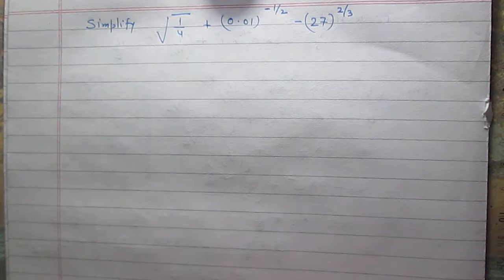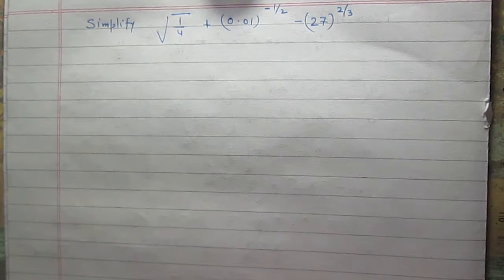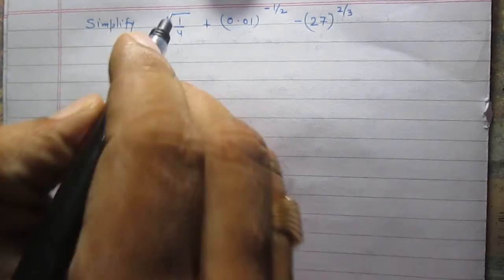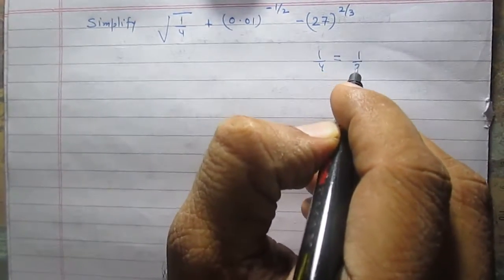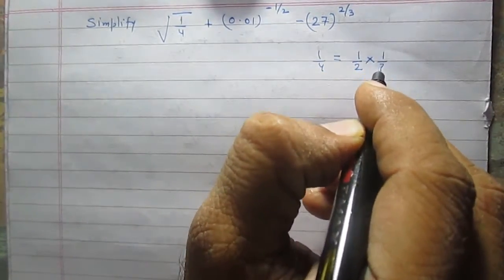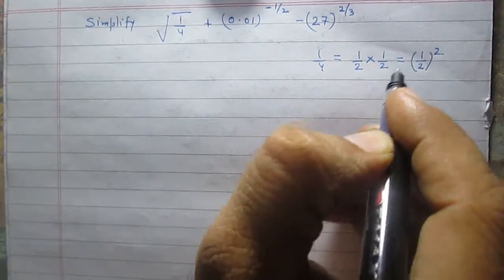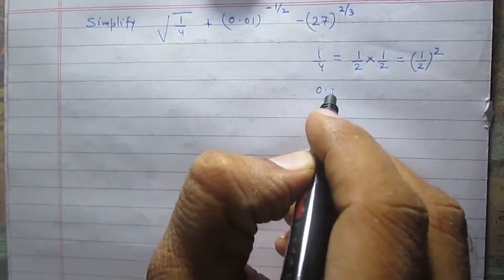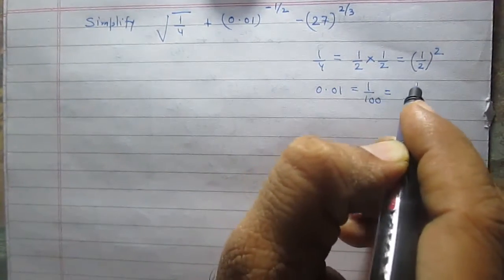Simplify: square root of 1 upon 4, plus 0.01 raised to the power minus 1 by 2, minus 27 raised to the power 2 by 3. We note that 1 by 4 can be written as 1 by 2 raised to the power 2, so square root of 1 by 4 is 1 by 2. Also, 0.01 is 1 upon 100, which can be written as 1 by 10 squared.